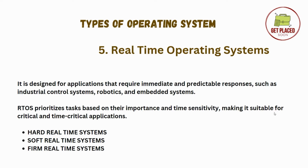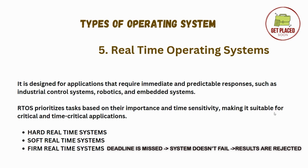Moving ahead, we have firm real-time system. The firm real-time system is between hard real-time and soft real-time system. If the deadline is missed occasionally, the system does not fail. Results after the deadlines are rejected, and sometimes missing deadlines can be tolerated.